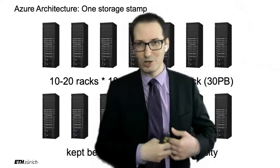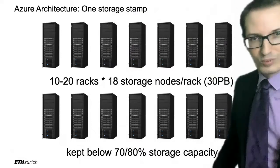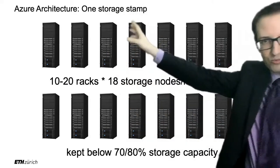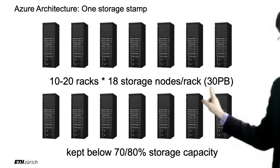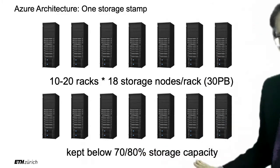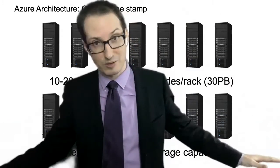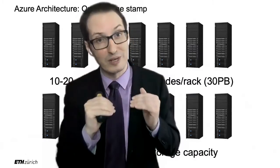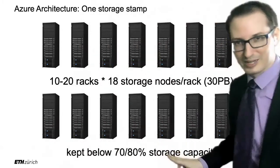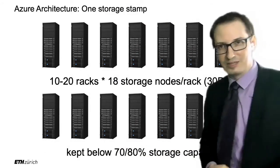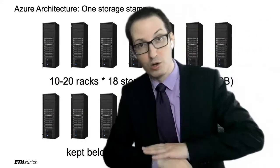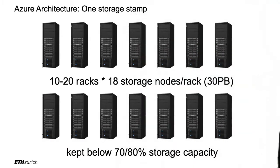A storage stamp is just one of these clusters with plenty of cheap commodity hardware. Typically, 10 to 20 racks, with 18 servers per rack — that's a lot of servers. If you sum all the hard drives in those racks, it's 30 petabytes of data in a single cluster. We try to keep it below 80% of storage capacity — if it exceeds that, we move data to a different data center. If your hard drive is full you get annoying messages; we want to avoid that. Azure claims to have exabytes of data across their system, with many storage stamps.